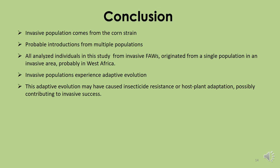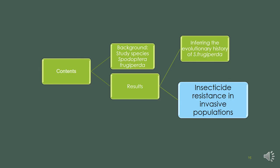This study shows that invasive populations come from the corn strain and that probable introductions from multiple populations were involved in the formation of the invasive population. All individuals analyzed from the invasive fall army worms originated from a single population in an invasive area, probably from West Africa. The study also showed that invasive populations experience adaptive evolution, and this adaptive evolution may have caused insecticide resistance or host plant adaptation. From this previous study, we generated the hypothesis that adaptive evolution may have caused insecticide resistance, which is the focus of the next study.